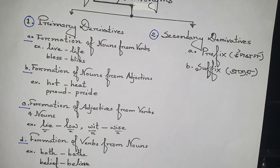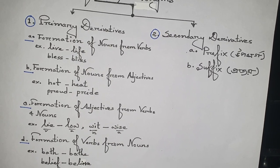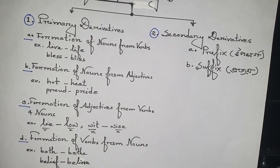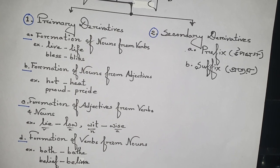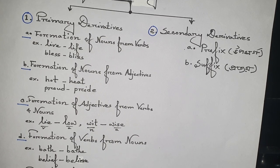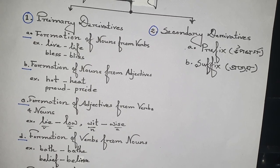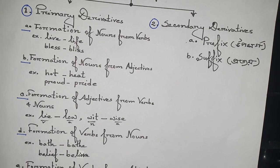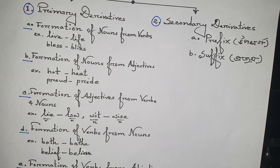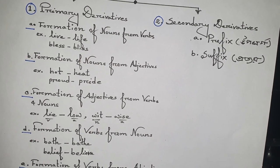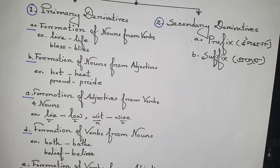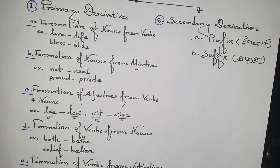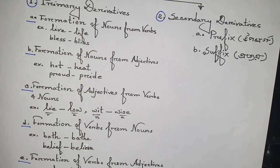Number B: formation of nouns from adjectives. Example: hot is an adjective; from hot we are getting the noun heat. Like this: proud, pride. Number C: formation of adjectives from verbs and nouns. Example: lie, low; wit, wise. Number D: formation of verbs from nouns.